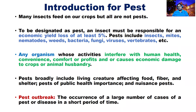Many people think that all insects are pests. But all insects are not pests, and all animals are not pests. When they cause damage beyond a certain level — what we call the economic threshold level — we call these organisms pests. At least five percent yield loss is the estimated minimum threshold.